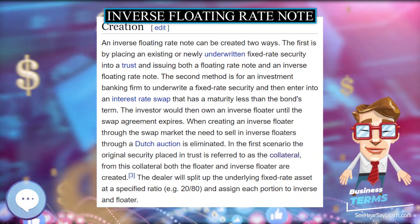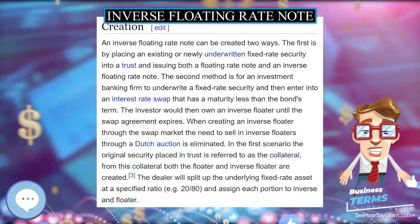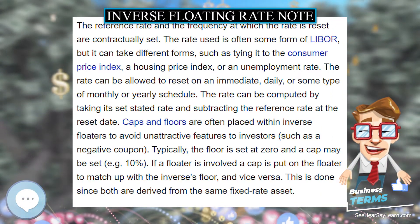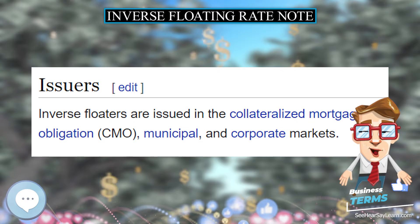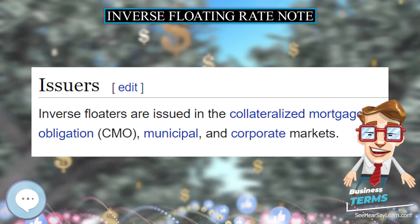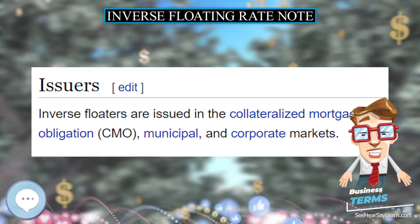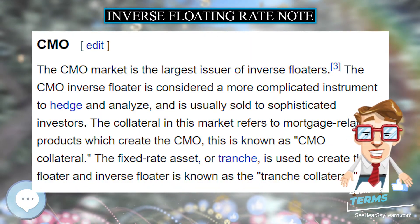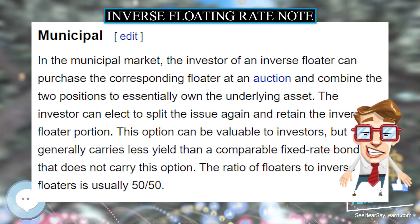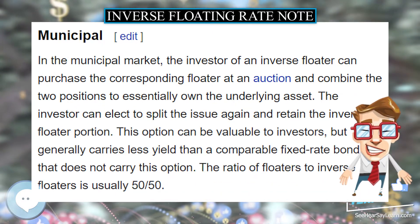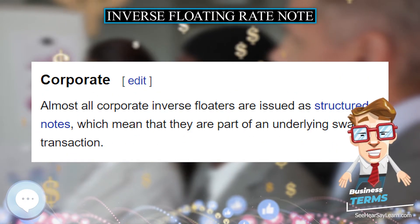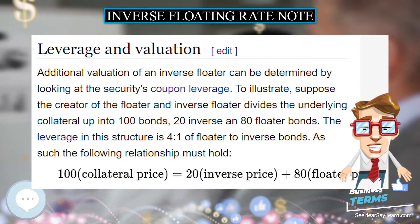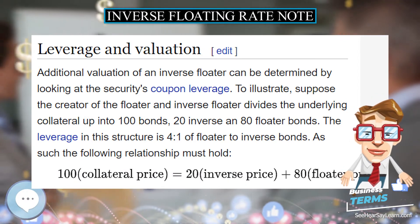An inverse floating rate note can be created two ways. The first is by placing an existing or newly underwritten fixed-rate security into a trust and issuing both a floating rate note and an inverse floating rate note. The second method is for an investment banking firm to underwrite a fixed-rate security and then enter into an interest rate swap that has a maturity less than the bond's term. The investor would then own an inverse floater until the swap agreement expires. When creating an inverse floater through the swap market, the need to sell inverse floaters through a Dutch auction is eliminated.